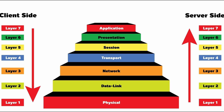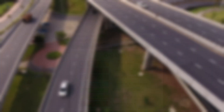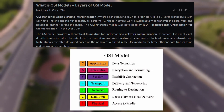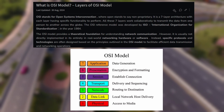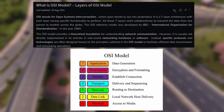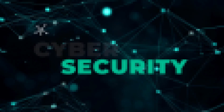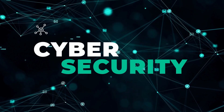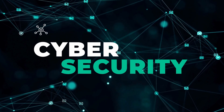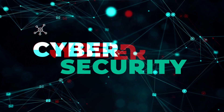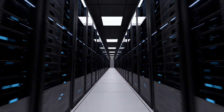The OSI model is like a map of how data travels across a network. It breaks down the process into seven layers, each responsible for a different function. These layers start from the physical hardware and go all the way up to the applications you use every day, like email or web browsing. The OSI model makes it easier for network engineers and cybersecurity professionals to pinpoint where issues are happening and where security weaknesses might exist. So let's take a closer look at each layer, starting from the bottom and working our way up.